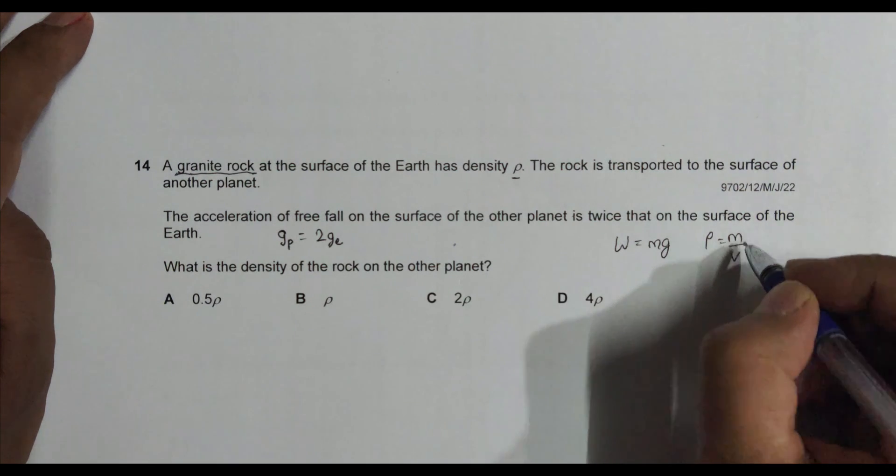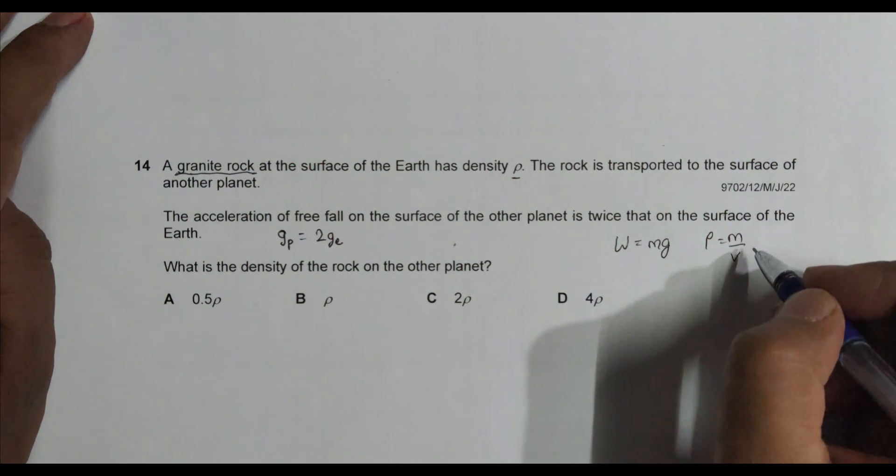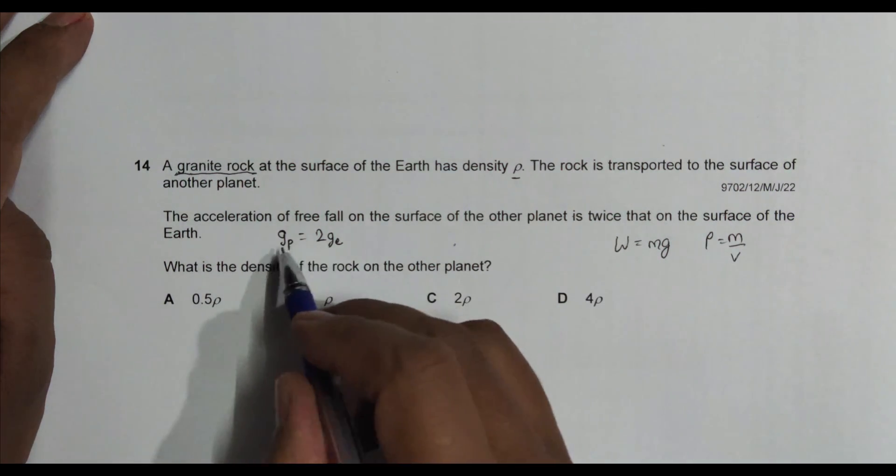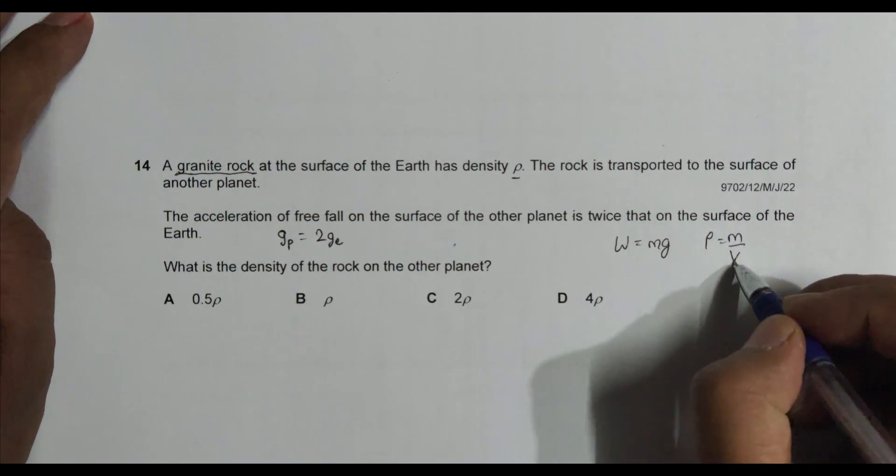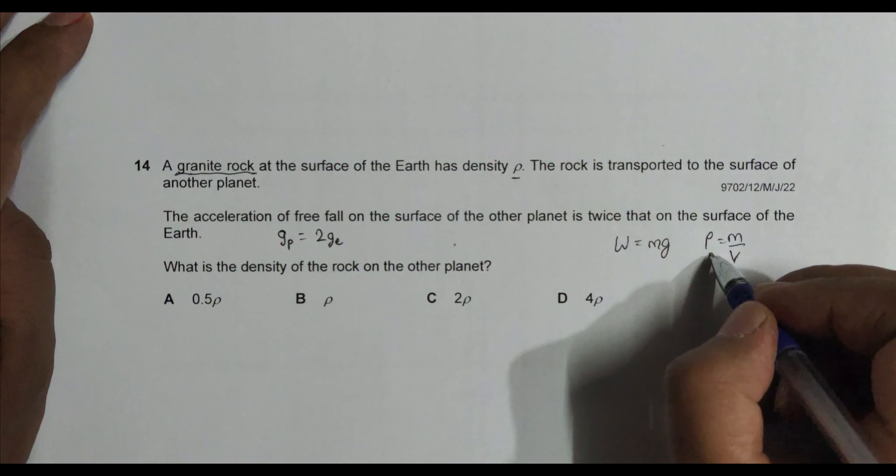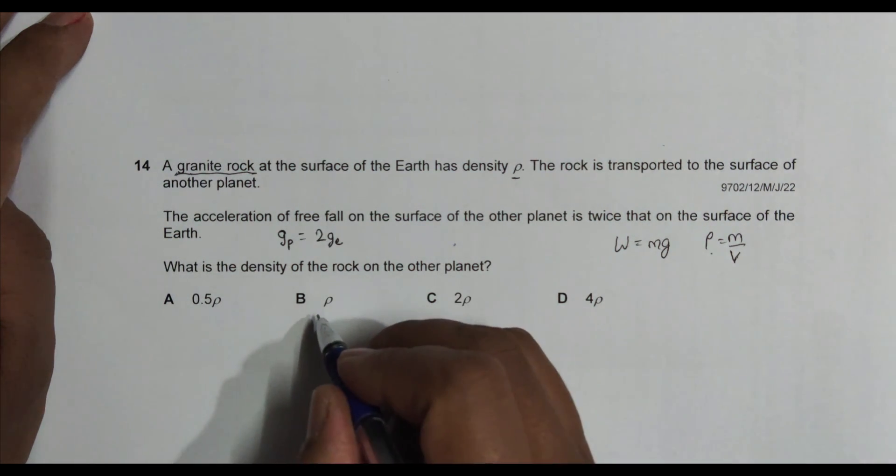Density is simply mass by volume. Mass does not change. The volume it occupies does not change. Simple. The difference of gravity does not make any difference in the volume, so that's why volume is same, mass is same, density is same. So it's a straightforward question.